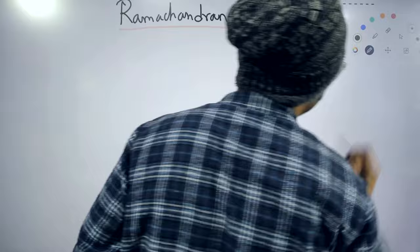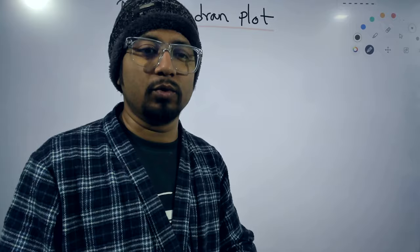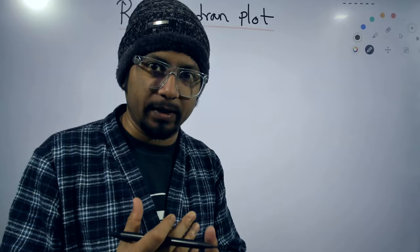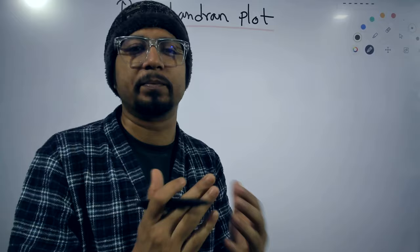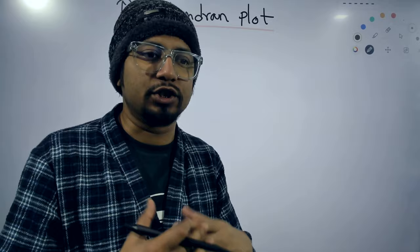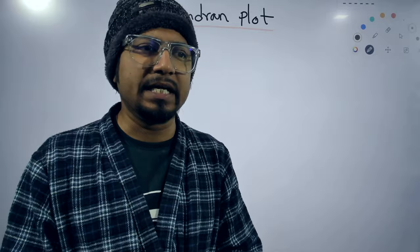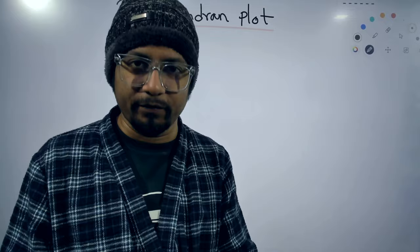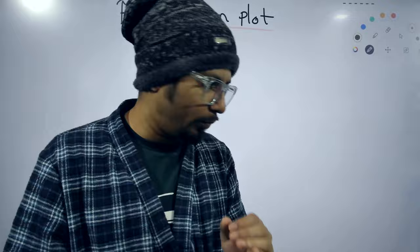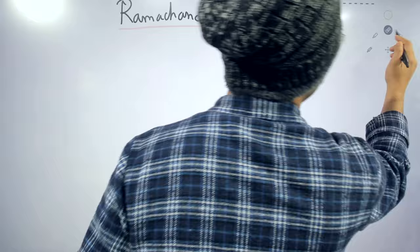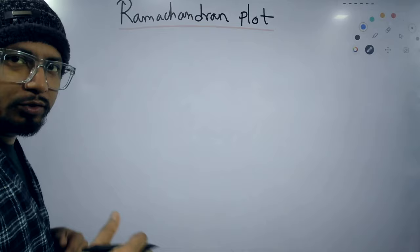The problem students face in understanding the Ramachandran plot is how exactly they can remember the phi and psi angles, and based on the representation of those angles, what kind of secondary structures are geometrically allowed in a protein. This video is not about basic concepts — I have already made videos on that in my channel. This is a mnemonic video, a trick video that will help you remember the Ramachandran plot in a methodical way. I'm going to tell you a simple mnemonic to remember it.